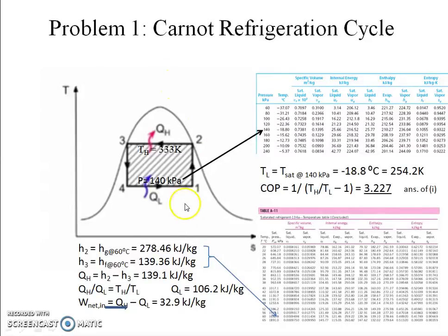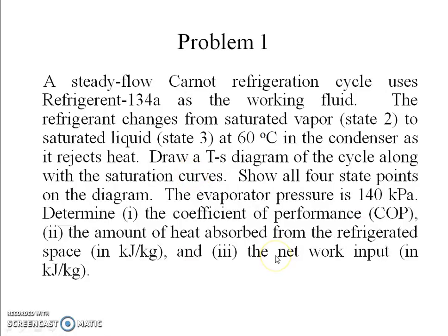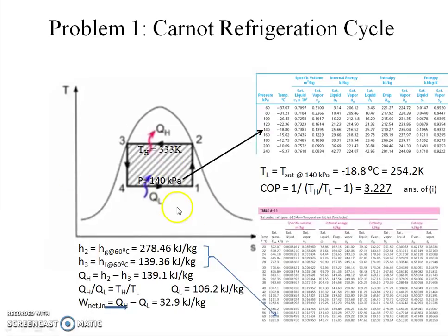For a reversible adiabatic process, entropy change is zero. From 1 to 2 the entropy change is zero, and from 3 to 4 it is also zero. Entropy changes only from 2 to 3, where Q_H amount of heat is rejected, and from 4 to 1, where Q_L amount of heat is absorbed in the evaporator section. This is how the cycle looks on a T-S diagram.